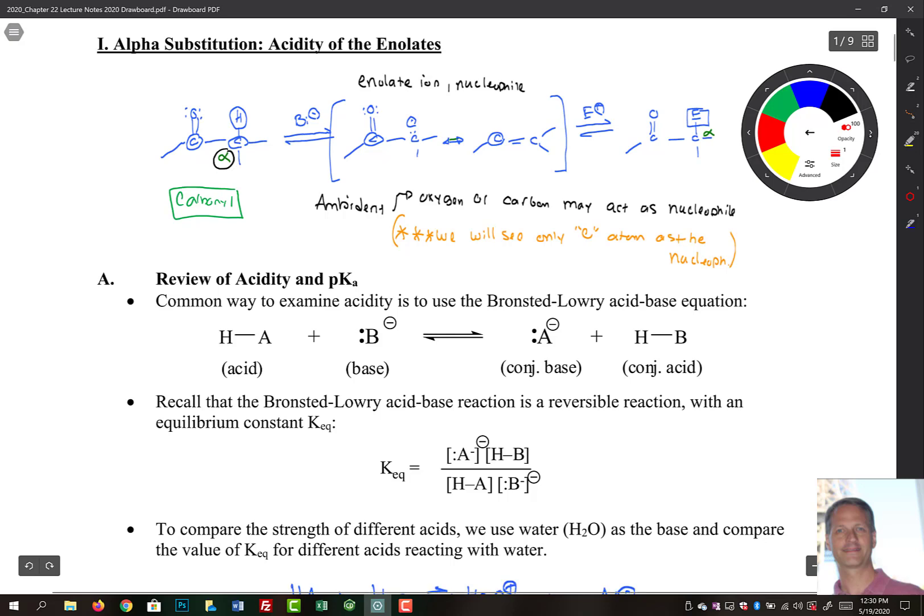So with a base present, the base can come over and grab a hold of that hydrogen atom right there. When it does that, these electrons then come down and live on your carbon. And then what you form is this intermediate called an enolate. A-T-E is an indication of a negative charge, so you have an enolate.